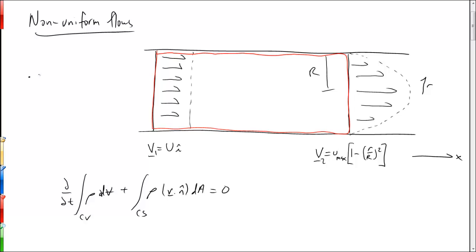We're considering steady flow and also incompressible flow. The first assumption allows us to cross off the unsteady term, and the second allows us to divide through by ρ since it's constant everywhere — and zero divided by ρ is zero.